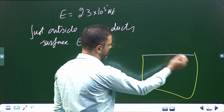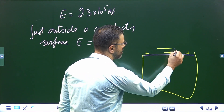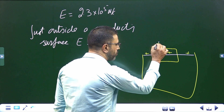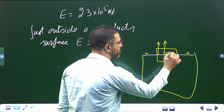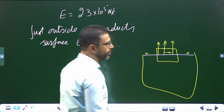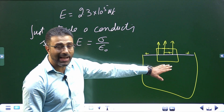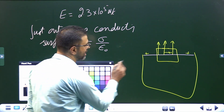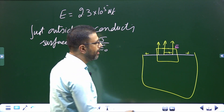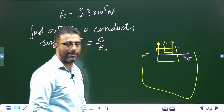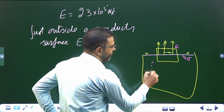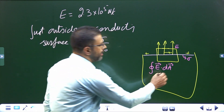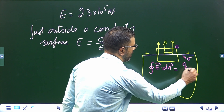If this is a conducting body with some charge, and you consider a cubical Gaussian surface very close to the surface, then the field can be considered as uniform. The field inside a metallic body is always zero, so field is zero inside. Suppose the field outside is E and the surface charge density is sigma at this point. Then from Gauss's law, the integral of E dot dA — the flux through a closed surface — equals Q enclosed divided by epsilon naught.